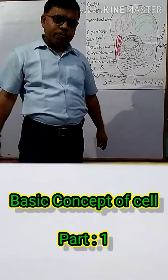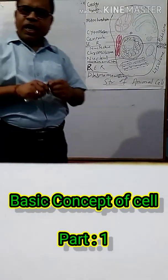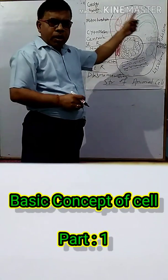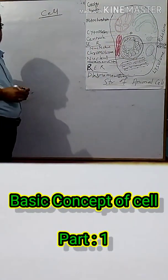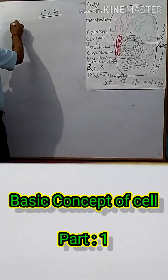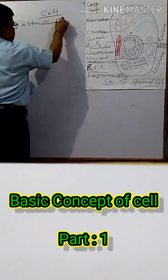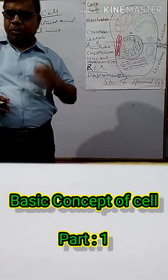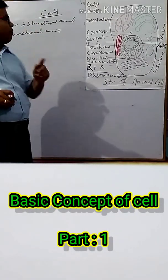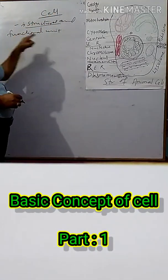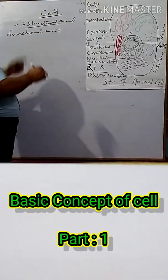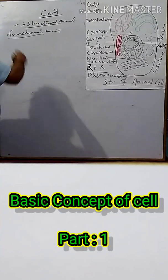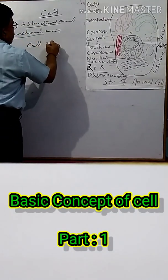Good morning everybody. Today we are going to discuss about the cell — the basic structure of the animal cell. First question: what is a cell? A cell is a structural and functional unit. Why is the cell the structural unit? Because each and every cell has a fixed structure. Why is the cell the functional unit? Because each and every cell has a fixed function. Hence, cell is the structural and functional unit of life.